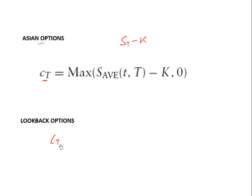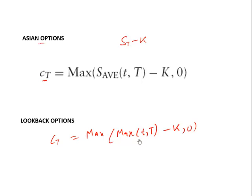Lookback options — a lookback call option has a payoff depending on the highest stock price over the period until maturity. We look at the maximum price the stock ever attained from purchase to maturity, and that maximum stock price is used to compute the payoff. A lookback option has a higher premium than a simple call option because S in the payoff S minus K is not the current spot price but rather the highest spot price during the holding period.